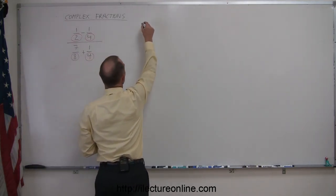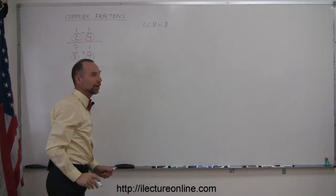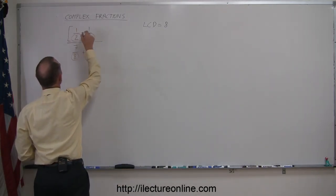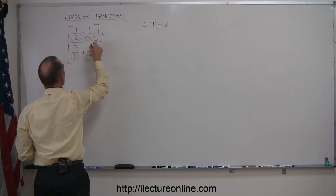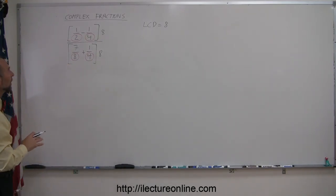So we can say that the LCD, in this case, is equal to 8 of all these fractions in there. And what we're going to do now is we're going to multiply the numerator of this complex fraction by the LCD, and of course, whatever we do to the numerator, we must do the same to the denominator. So we're going to multiply the numerator and the denominator by the lowest common denominator.